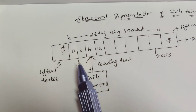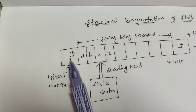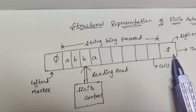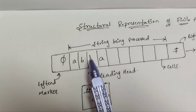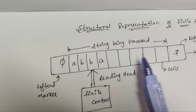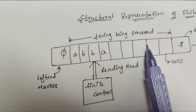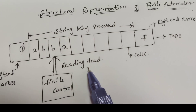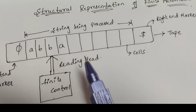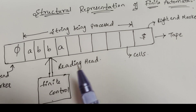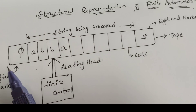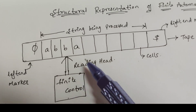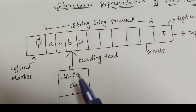The left end marker is represented with pi and the right end marker is represented with a dollar symbol. In between these markers, the string is being processed. The read or write head examines one square at a time and can move one square either to the left or to the right, indicating which cell is to be processed.